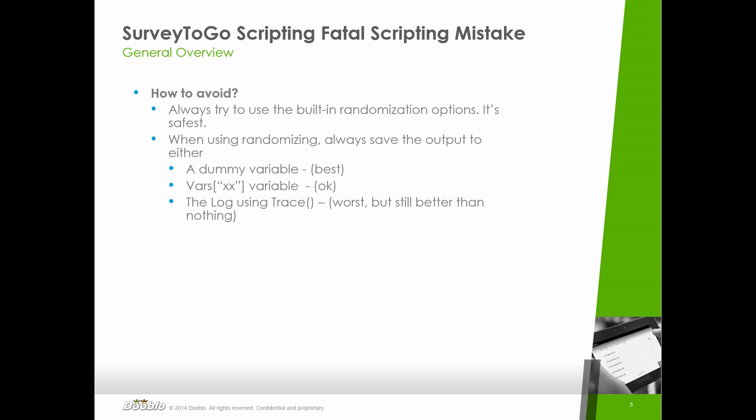The last technique — it's not ideal, but better than nothing — is to log the output using the trace function, which logs it to the interview log. If worst comes to worst, you can manually or programmatically analyze the interview logs for each interview collected. This might cost days of work, but at least you won't lose the data. So your best bet is: dummy variable first, then global vars variable, then logging to the log file. And you don't have to choose just one — you can do all three, two, or just one.